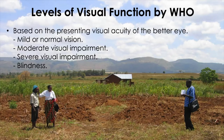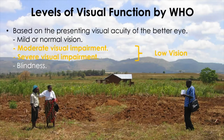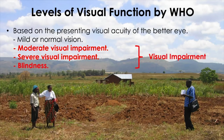WHO has agreed on the use of four different levels of visual function as described in the International Classification of Disease 10. These four levels are mild or no visual impairment, moderate visual impairment, severe visual impairment, and blindness. Each of these four levels has a clear criterion based on visual acuity measurement. According to this classification, moderate and severe visual impairment are grouped under the term low vision, whereas low vision taken together with blindness represents all visual impairment.